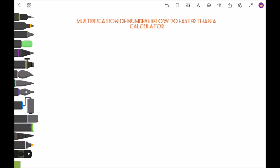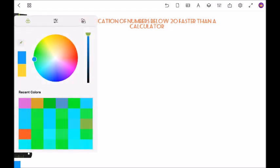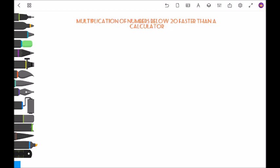Hi, today I will share with you how to multiply numbers below 20 faster than a calculator. Let's see 14 times 12.